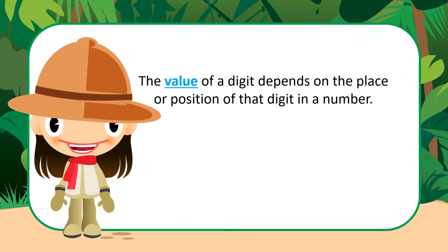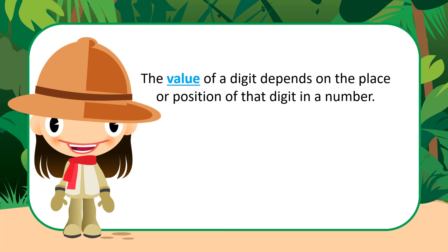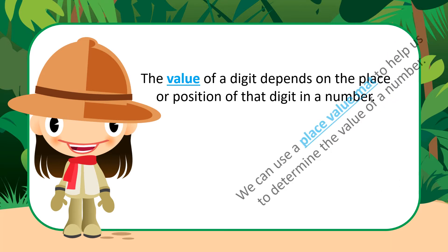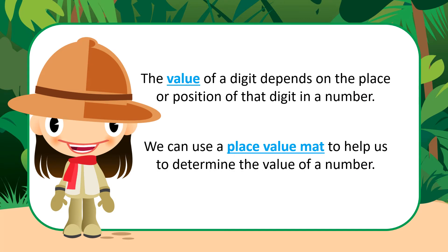The value of a digit depends on the place or position of that digit in a number. We can use a place value chart to help us determine the value of a digit. Let's look at a few examples.